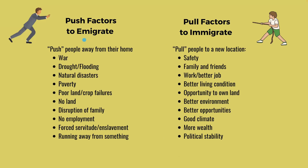Push factors to immigrate include: war, natural disasters, poverty, poor land where crops failed, or having no land and wanting to acquire some in the new world. Maybe the family was disrupted — parents divorced, both parents died, kids were farmed out. Maybe there was no employment, they were forced into servitude or enslavement, or they were running away from something and wanted to go elsewhere.